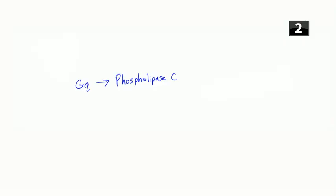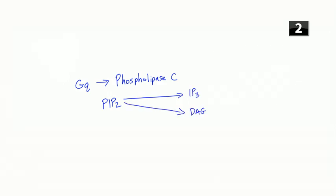Next question: outline the pathway by which stimulation of a Gq receptor activates protein kinase C. Gq receptors activate phospholipase C, which converts PIP2 to inositol triphosphate and diacylglycerol. Diacylglycerol then activates protein kinase C.